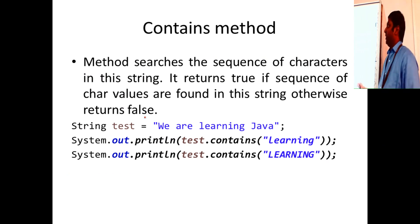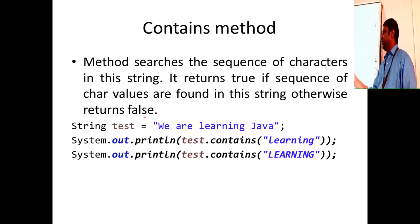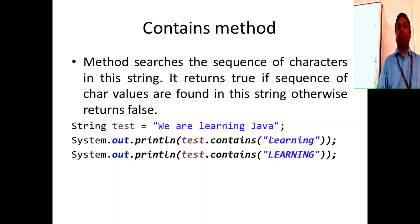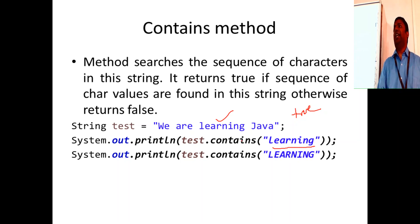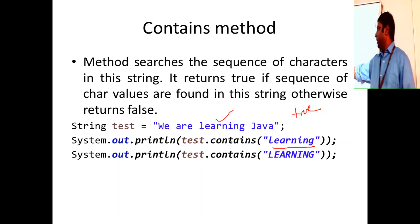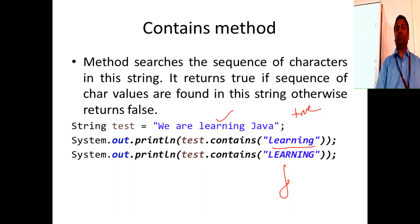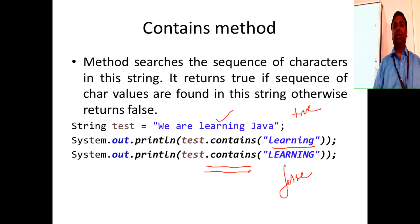The `contains()` method searches for a sequence of characters within a string and returns true or false. For example, `test.contains("learnings")` will match and return true. You can search for any sequence of characters. If the sequence is not present it returns false. It is a very useful and effective method.